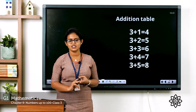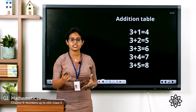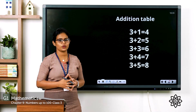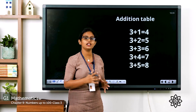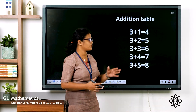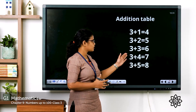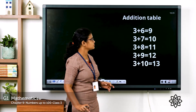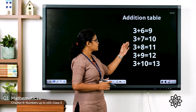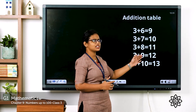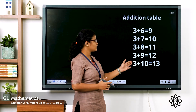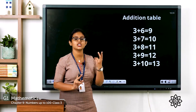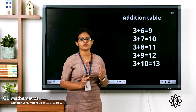Before closing, in the last class we discussed the addition table of 2; the next is the addition table of 3. Let's revise — repeat along with me: 3+1=4, 3+2=5, 3+3=6, 3+4=7, 3+5=8, 3+6=9, 3+7=10, 3+8=11, 3+9=12, 3+10=13. You have to repeat the addition table of 3 two times.